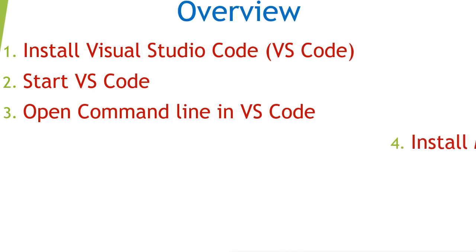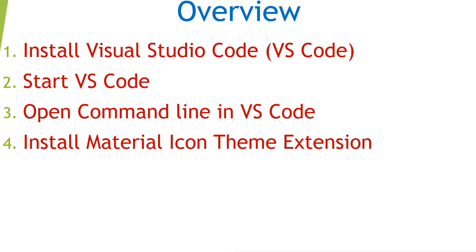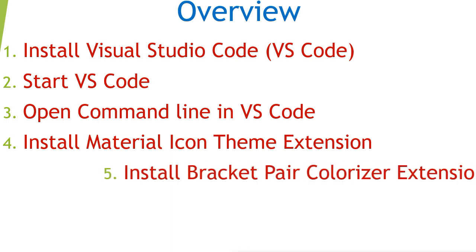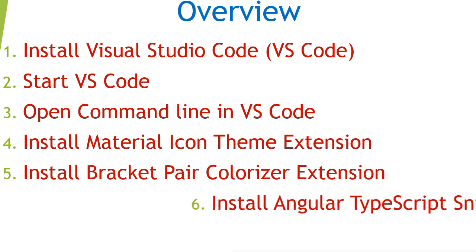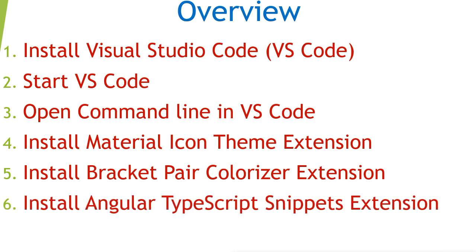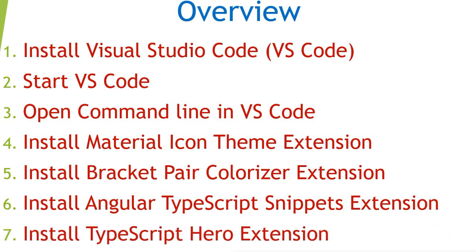At first, the Material Icon Theme extension enables you to differentiate similar files with colorful icons. Next, the Bracket Pair Colorizer extension enables you to distinguish between nested brackets by color. Next, Angular TypeScript Snippet extensions which includes many useful templates for writing TypeScript and HTML. Finally, TypeScript Hero extension which has the function of auto-writing import statements.